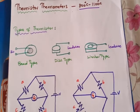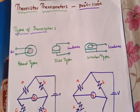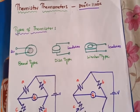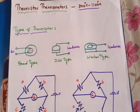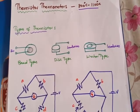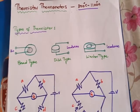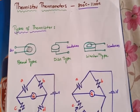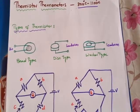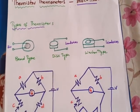When the thermistors are heated, what happens? The resistance changes. And this change in resistance, whatever is taking place, is used for the measurement of temperature.